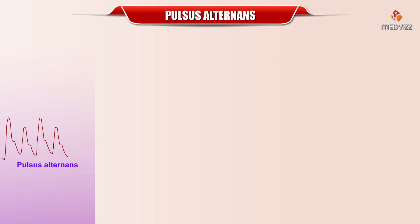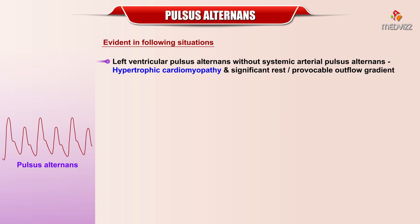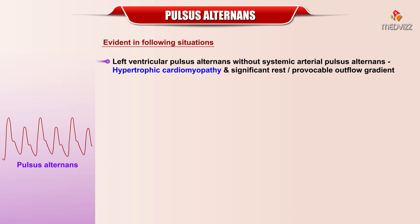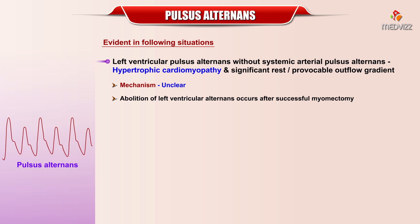Pulsus alternans may also be evident in the following situations. Left ventricular pulsus alternans without systemic arterial pulsus alternans has been observed in patients with hypertrophic cardiomyopathy and a significant rest or provocable outflow gradient. The mechanism remains unclear.